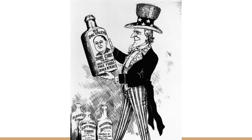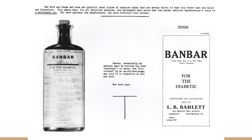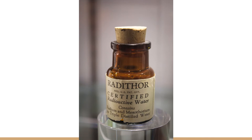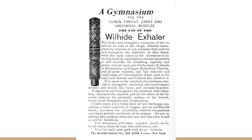While the Wiley Act focused on food as the greatest public health threat, over time there was a need to change the law as there were shortcomings to the 1906 Wiley Act. This was exemplified when the FDA assembled a collection of products such as Banbar, a worthless cure for diabetes that the old law protected; Lash Lure, an eyelash dye that caused injuries including one confirmed case of permanent blindness; Radithor, a radium-containing tonic that sentenced users to a slow and painful death; and the Wild Hide Exhaler, which falsely promised to cure tuberculosis and other pulmonary diseases.